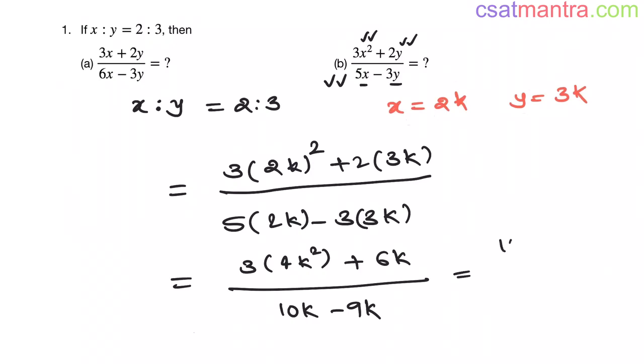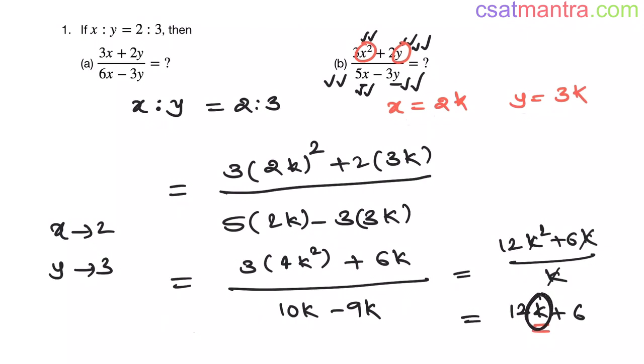Now if you observe, this is 3×4k² + 6k by 10k - 9k. This is 12k² + 6k by k. If you solve this, k got cancelled—one k. Now 12k + 6. See, k remained here because the power of x and power of y in each term in numerator is not the same, and that power is not same as in denominator also. Here power of y should be 2; here power of x should be 2 and power of y should be 2. Then only k² will get cancelled. So in these cases you cannot substitute x as 2 and y as 3 and find the value.